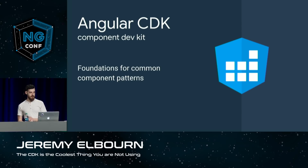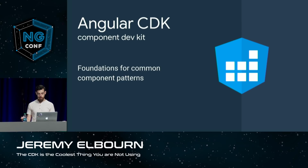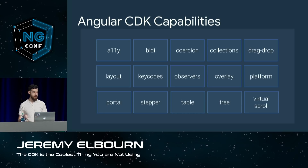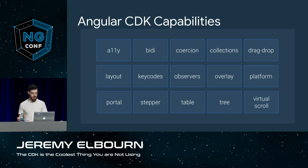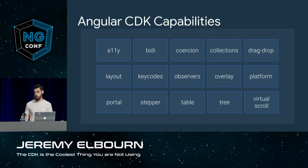Many of you aren't using the CDK, or some of you might not even know about it. CDK stands for Component Dev Kit and it is a package of common foundations and patterns that you can use for building your own UI components. The CDK is comprised of multiple capabilities ranging from accessibility and bidirectionality, overlays, platform detection, tables, trees, and even some new stuff like drag and drop and virtual scroll. We originally set out to make the CDK because more and more organisations are building their own design systems and we want them to take advantage of the work we do in building common components for Angular Material.